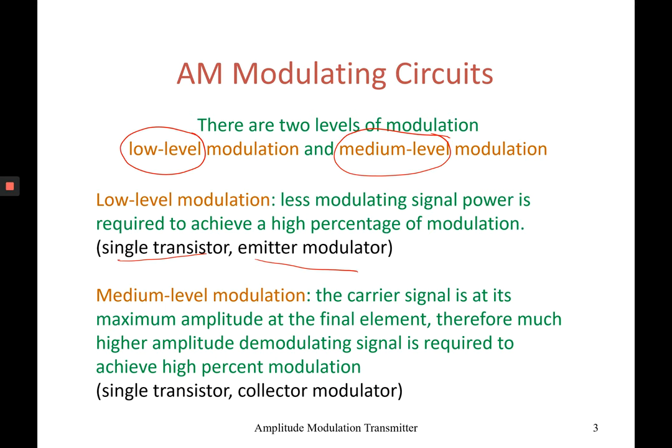Next, the medium level modulation. For this one, the carrier signal is at its maximum amplitude, and therefore a much higher amplitude modulating signal is required to achieve high percent modulation. With this medium level modulation, it also can be used to achieve a high percent modulation index. It also uses a single transistor, but this time the modulator is connected to the collector.